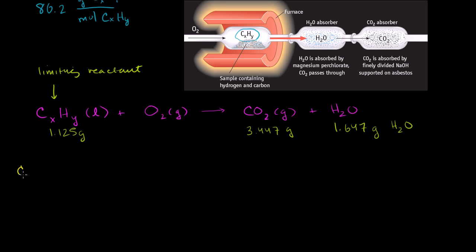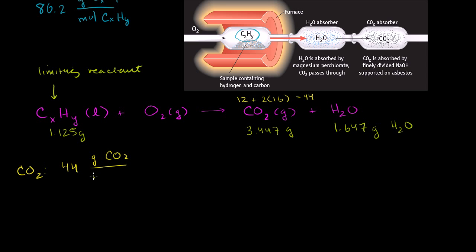Starting with carbon dioxide: its molar mass is carbon at 12, plus 2 oxygens at 16 each, which equals 44 atomic mass units. So for a whole mole of carbon dioxide — 6.022 × 10²³ molecules — you have 44 grams. Therefore, 44 grams of CO₂ per mole of CO₂.